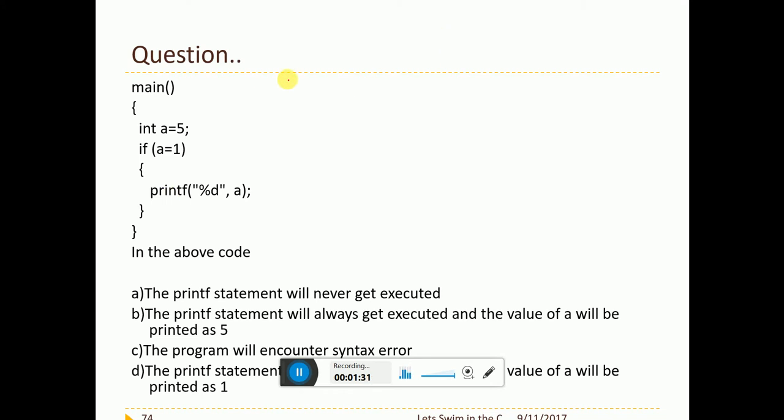This is a very important question. See that guys. I have int a equal to 5. I do a check here with an if a equal to 1. Please note that here I do not have double equal to. I have only 1 equal to, which means that I am assigning a with 1. Can assignment be done inside the if loop? That's the question.